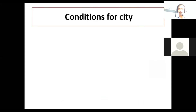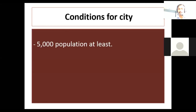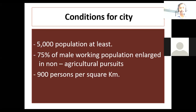Then conditions for a city — why does a region become a city? First condition: at least 5,000 population. Then 75% of male working population engaged in non-agricultural pursuits, which is very important. As a city, there is no agriculture; non-agricultural work mainly focuses on industrial work or jobs. Then 9,000 persons per square kilometer. These are the conditions for cities.